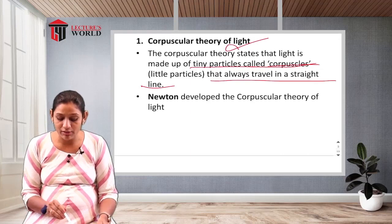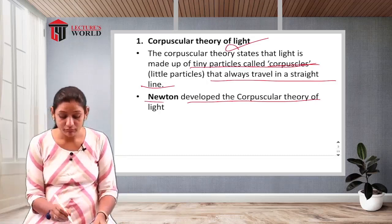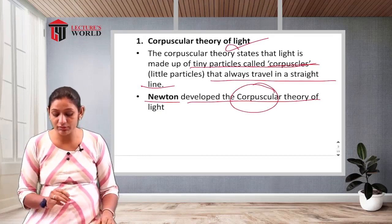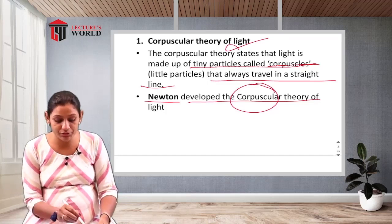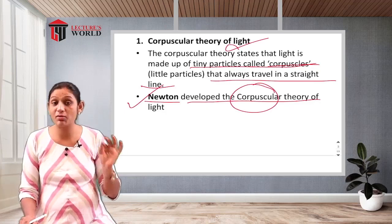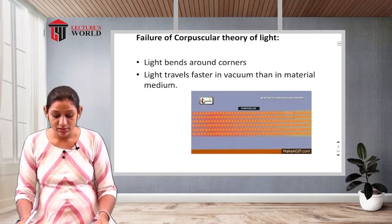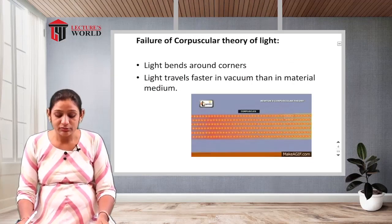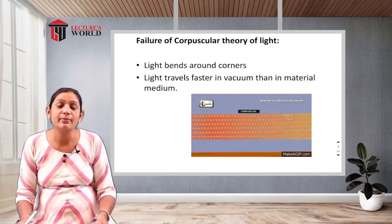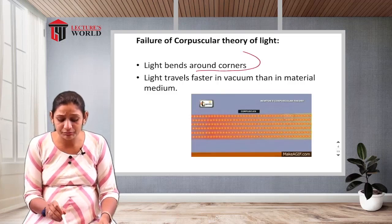Newton developed the corpuscular theory of light. He proposed that light is made up of small particles called corpuscles. However, the corpuscular theory ultimately failed. The failure occurred because light bends around corners — a phenomenon which the theory could not explain.